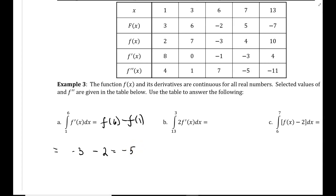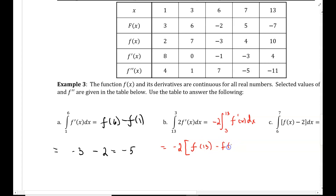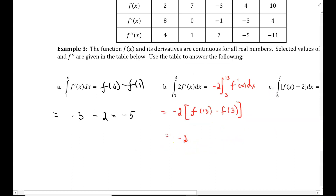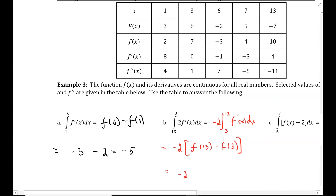Part b: the integral from 13 to 3 of 2 f prime of x dx. I'll fix the limits and pull out the 2 as a constant factor — this becomes negative 2 times the integral from 3 to 13 of f prime of x dx, which equals negative 2 times f of x evaluated from 3 to 13. Plugging in: f of 13 is 10, minus f of 3, which is 7. That gives 3, and negative 2 times 3 gives us negative 6.